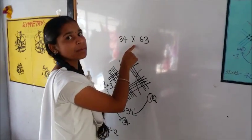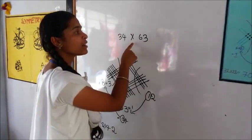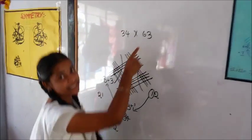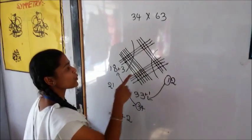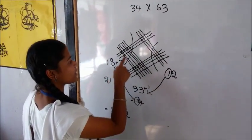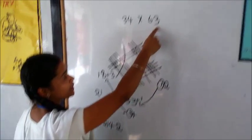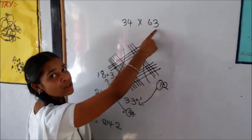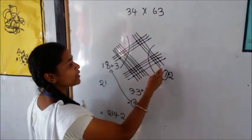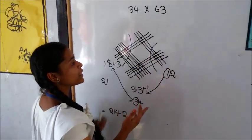After the multiplication symbol, the first digit is 6, so we draw 6 cross lines. Give some space, and the second digit is 3, so we draw again 3 cross lines.